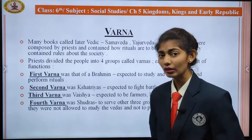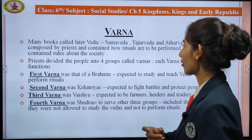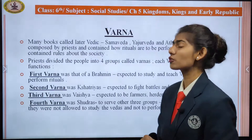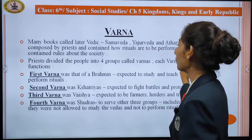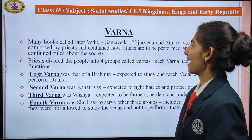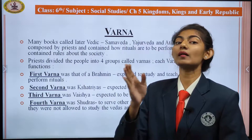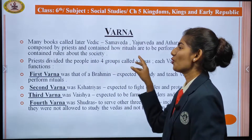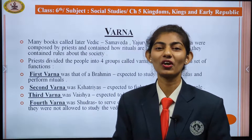Now let's study about Varna. There are many books called the later Vedic texts — that is Samaveda, Yajurveda, Atharvaveda, and the Rigveda. These were composed by priests and contain instructions on how rituals are to be performed, as well as rules about society. The priests divided people into four groups called Varnas.